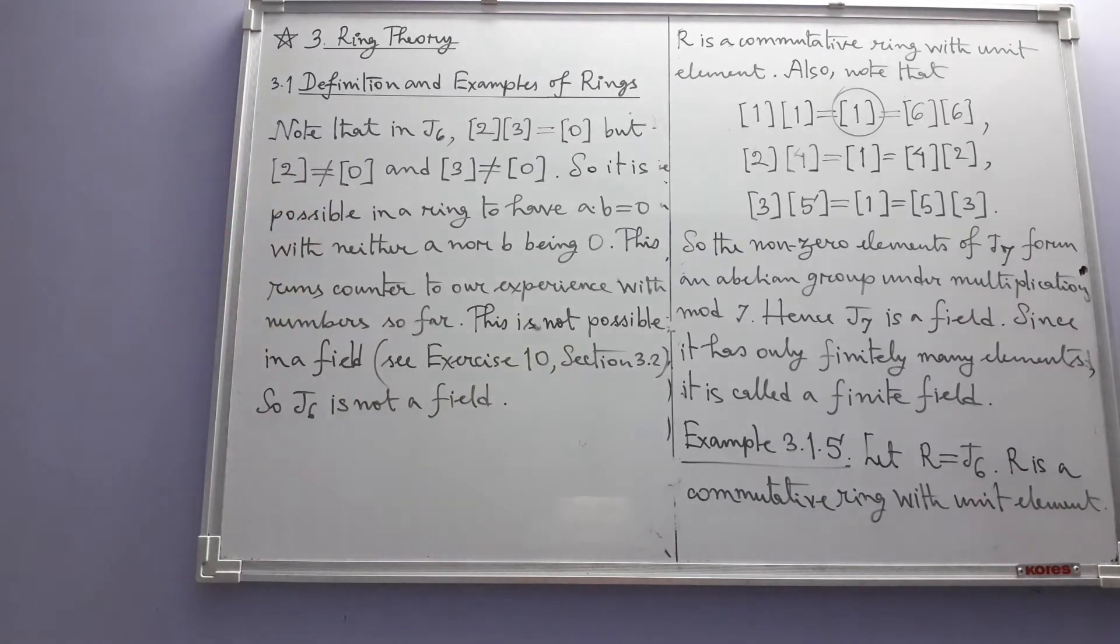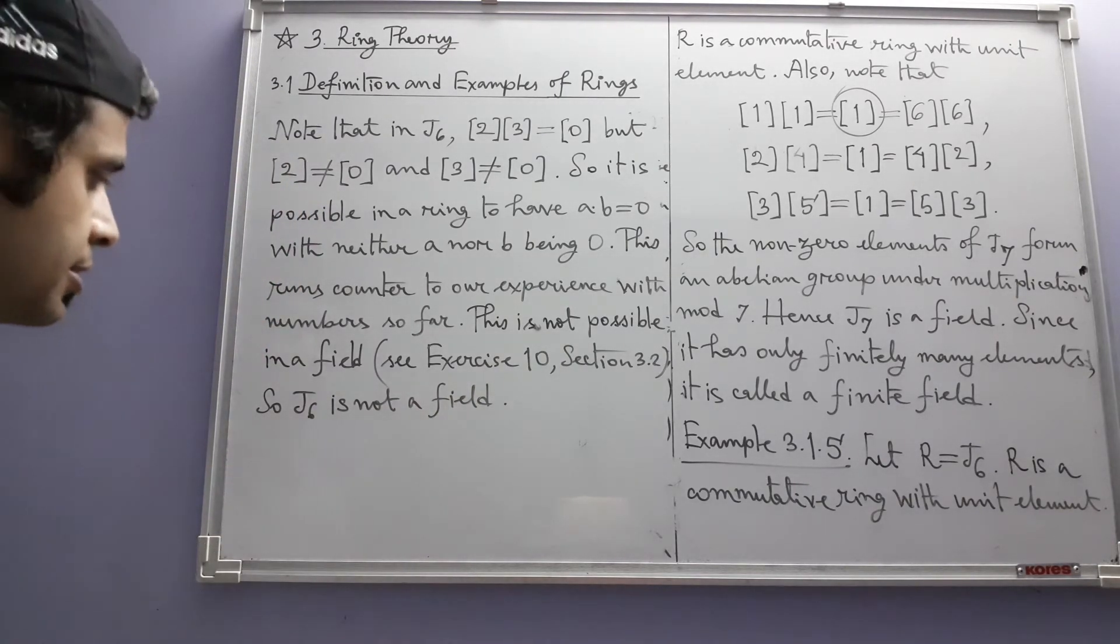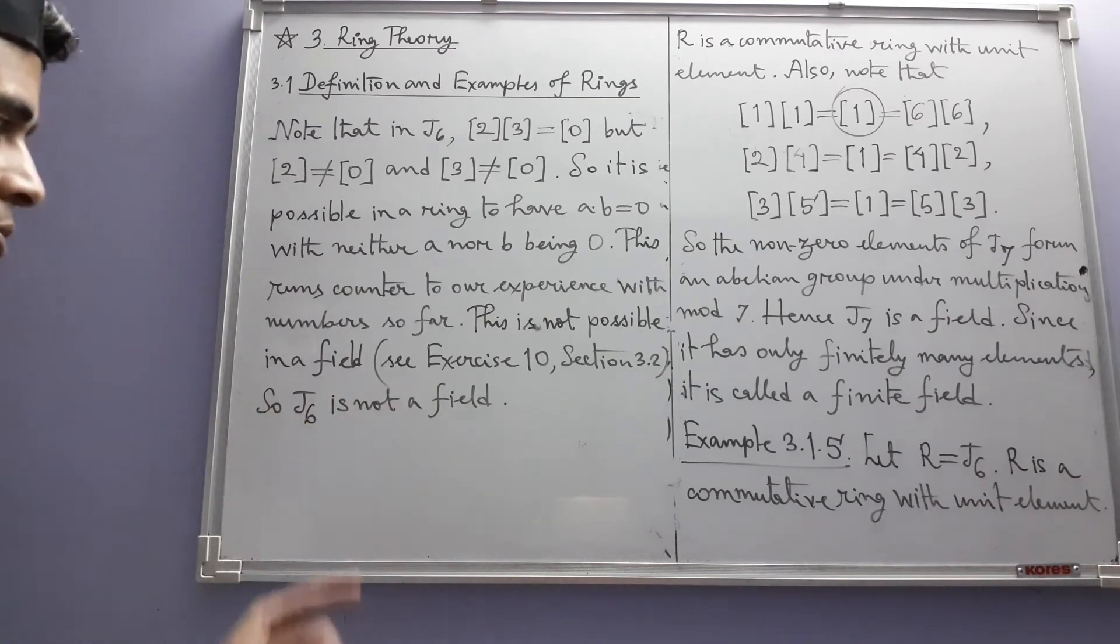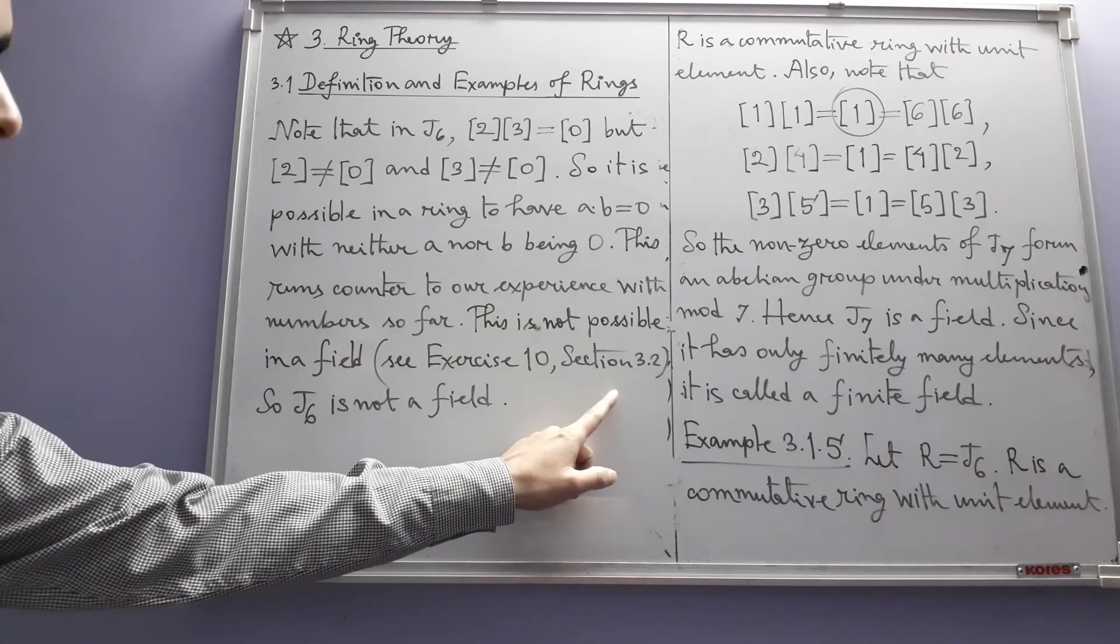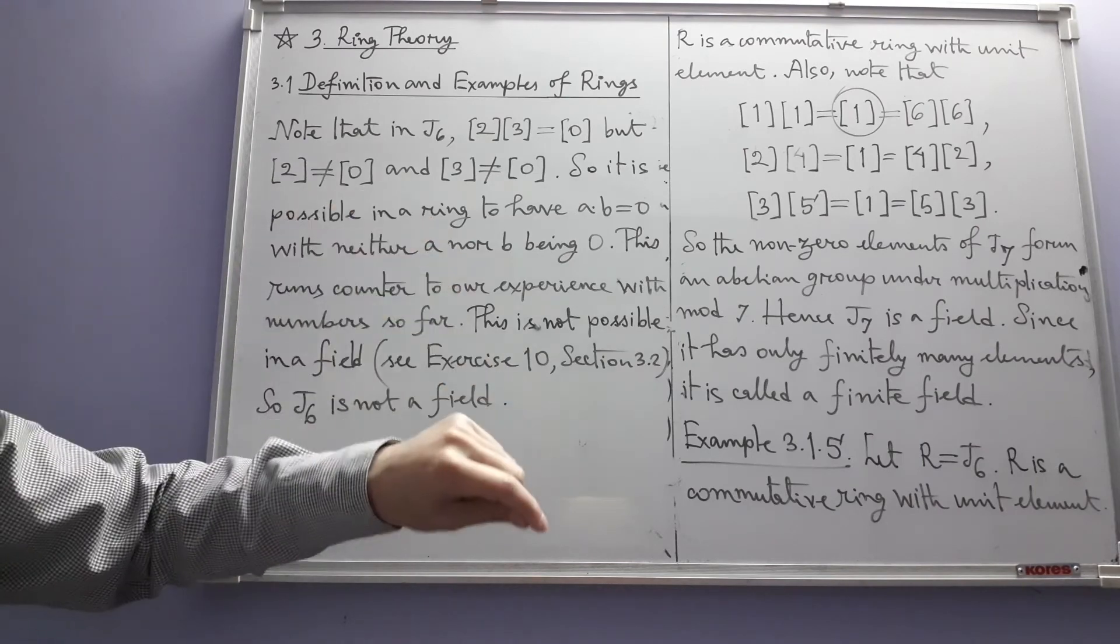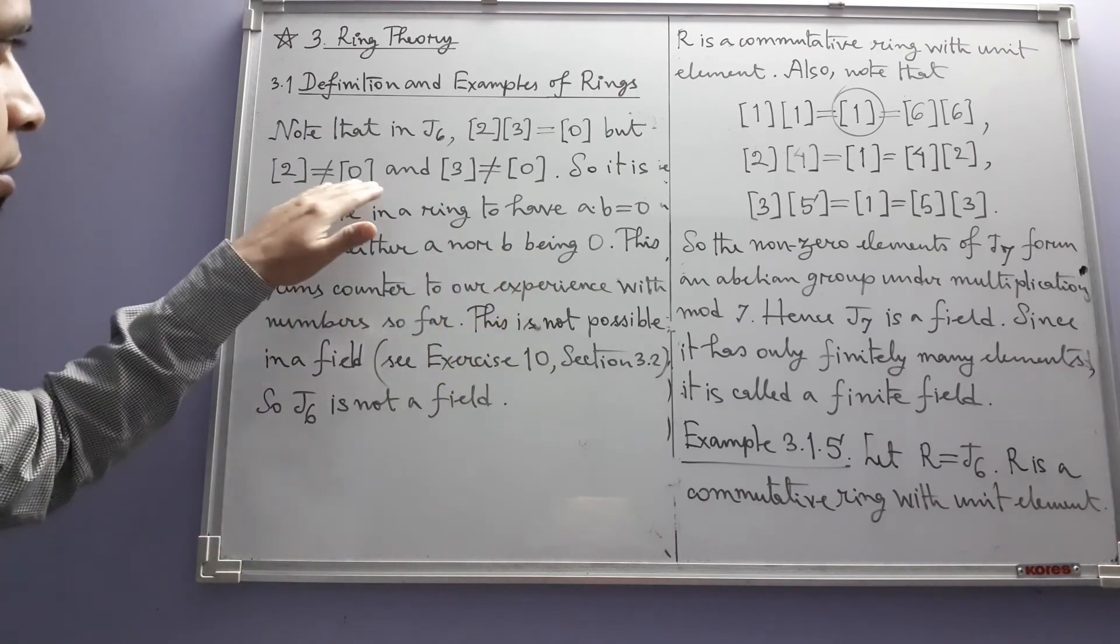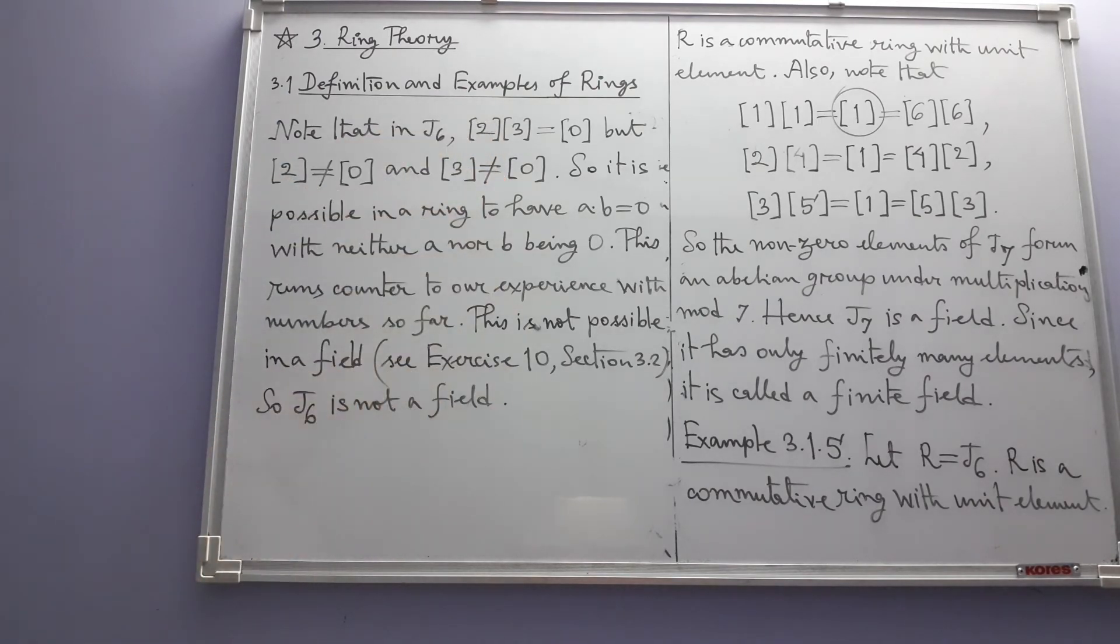We don't have to directly verify that J6 is not a field. It does not satisfy one of the necessary conditions that should be satisfied in a field. In a field the product of any two non-zero elements has to be non-zero. Since this is not satisfying that, so J6 cannot be a field. Now the rings that we have seen, these five examples, all of them have been commutative rings.